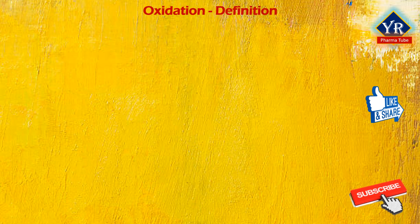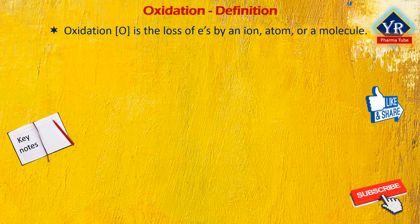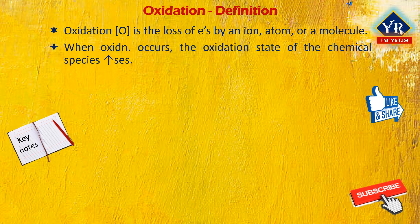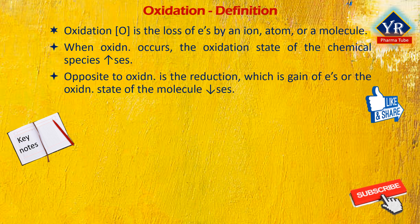Before going to understand the oxidation reactions of drug metabolism, let's take some key notes on oxidation and its definition in chemistry. Oxidation is the loss of one or more electrons by an ion, atom, or a molecule in a chemical reaction. When oxidation occurs, the oxidation state of the chemical species increases. The opposite process is called reduction, which occurs when there is a gain of electrons or the oxidation state decreases.